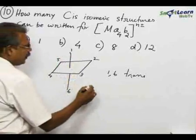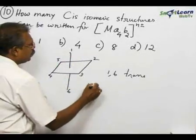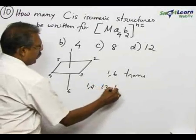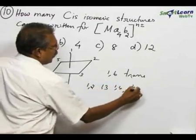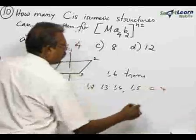For example, here you can write 1, 2, then 1, 3, 1, 4 and 1, 5. Here this will give four structures.